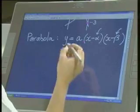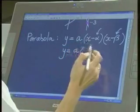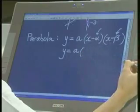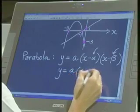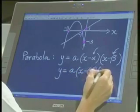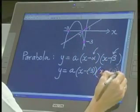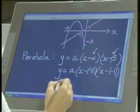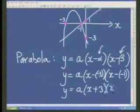So in this case, we have an a, which we don't know. We've got an alpha, if we just go back up, of negative 3. And we have a beta of negative 1. And if we simplify that, we get a x plus 3 x plus 1.